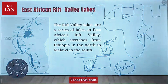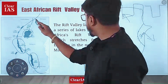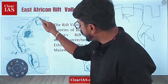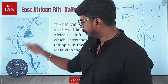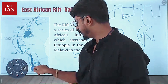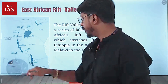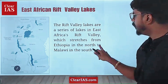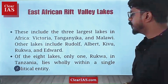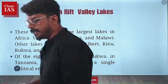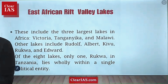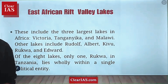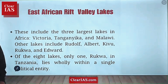Now we'll mark the rift valley, which extends from almost Ethiopia to Malawi — that is the extent of the Rift Valley. Let's also write down the names of the smaller lakes that are formed here.